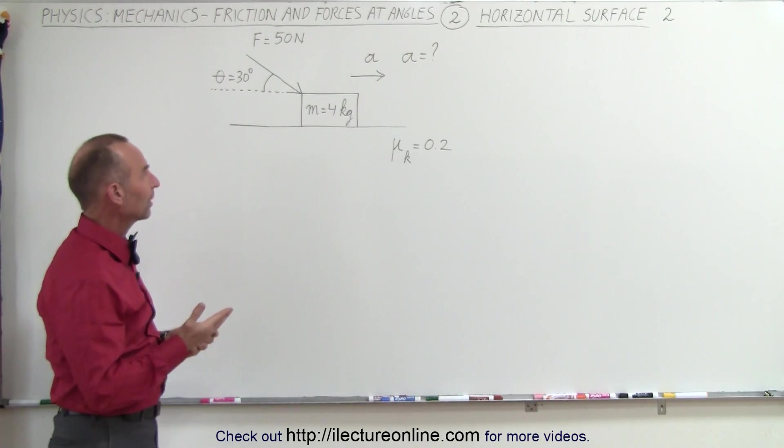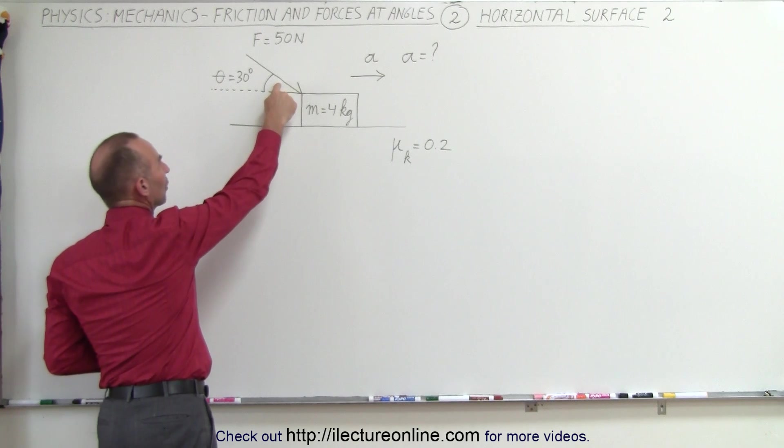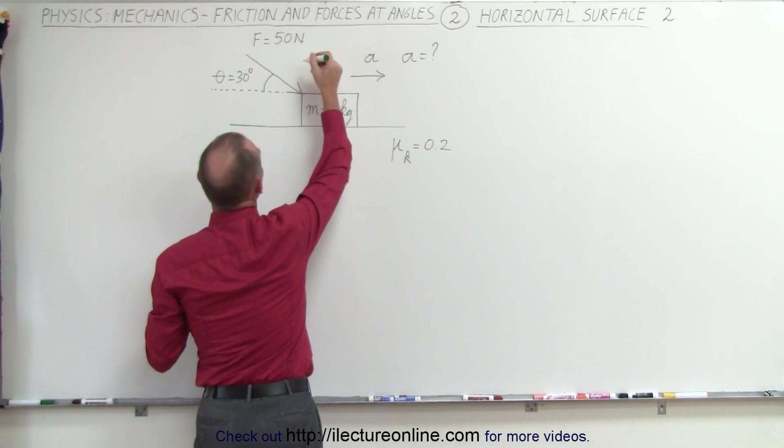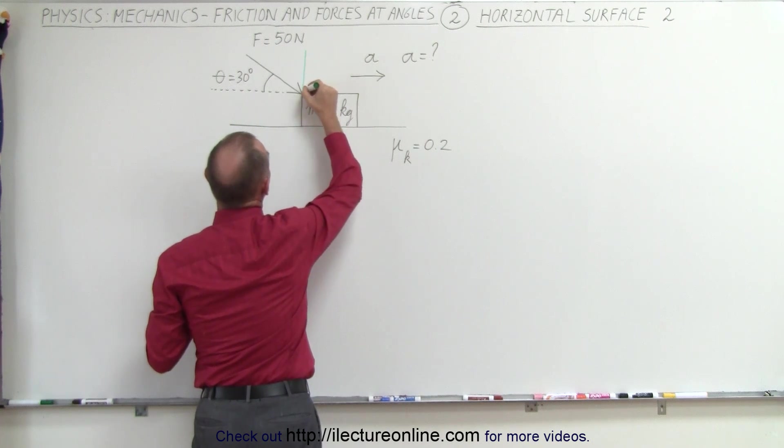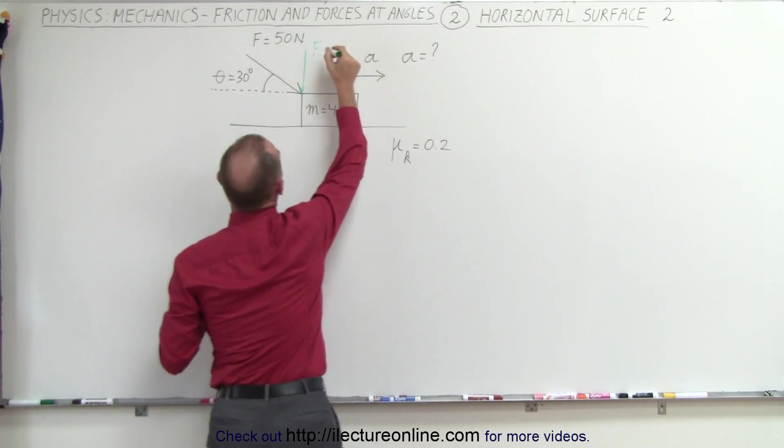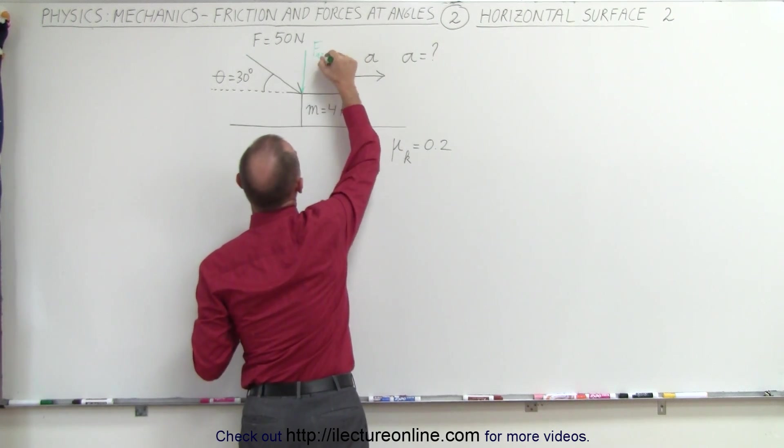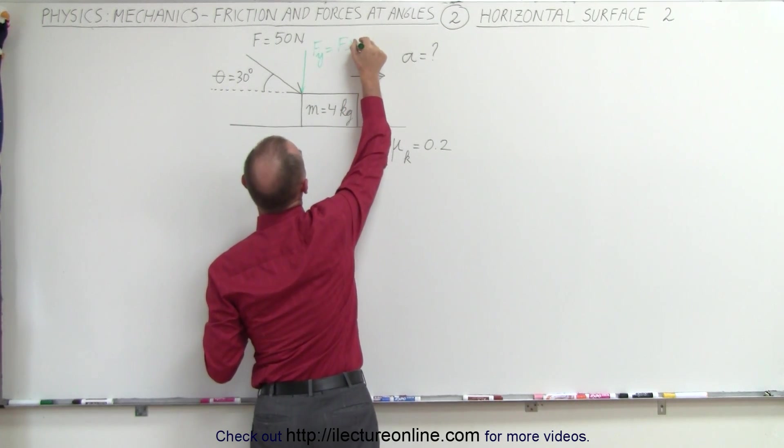What we want to do first is divide this force into their x and y components. So we have a vertical component. This would be f times d. Of course that would be opposite of the angle, so that's f sub y which is f times the sine of theta.